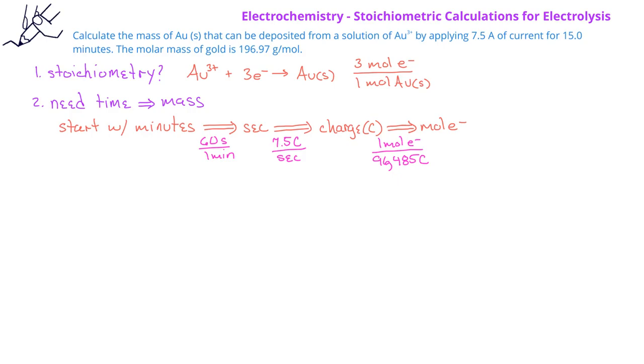We then use the inverted mole ratio between the gold and the electrons, so we have 1 mole of gold for every 3 moles of electrons. The final conversion factor we would use is the molar mass, which will give us the grams of gold.